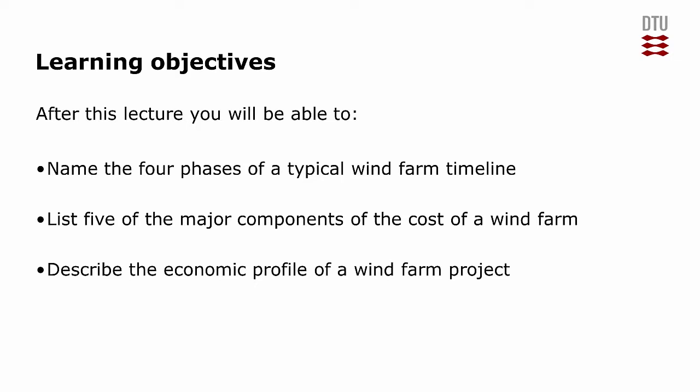So the learning objectives for this session are that you should be able to name the four phases of a typical wind farm timeline. Then you should be able to list five of the major components of the cost of the wind farm. And lastly, we're also going to describe the economic profile of a wind farm project that is a little bit different from what you might expect from a conventional generating plant.